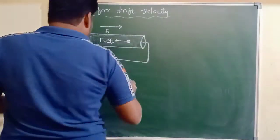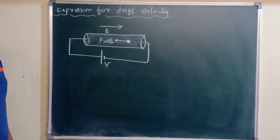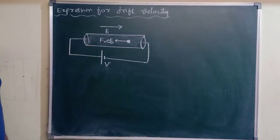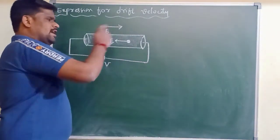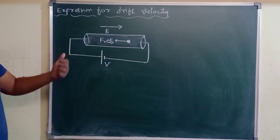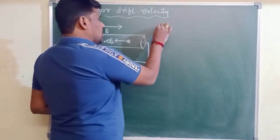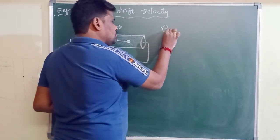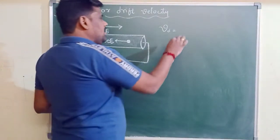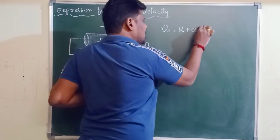This concept is related to the mechanics of free electrons. Free electrons are experiencing a force; when they experience a force, they move with some velocity. That velocity is called drift velocity. Drift velocity can be calculated using the simple equation of motion: Vd = u + a·τ.